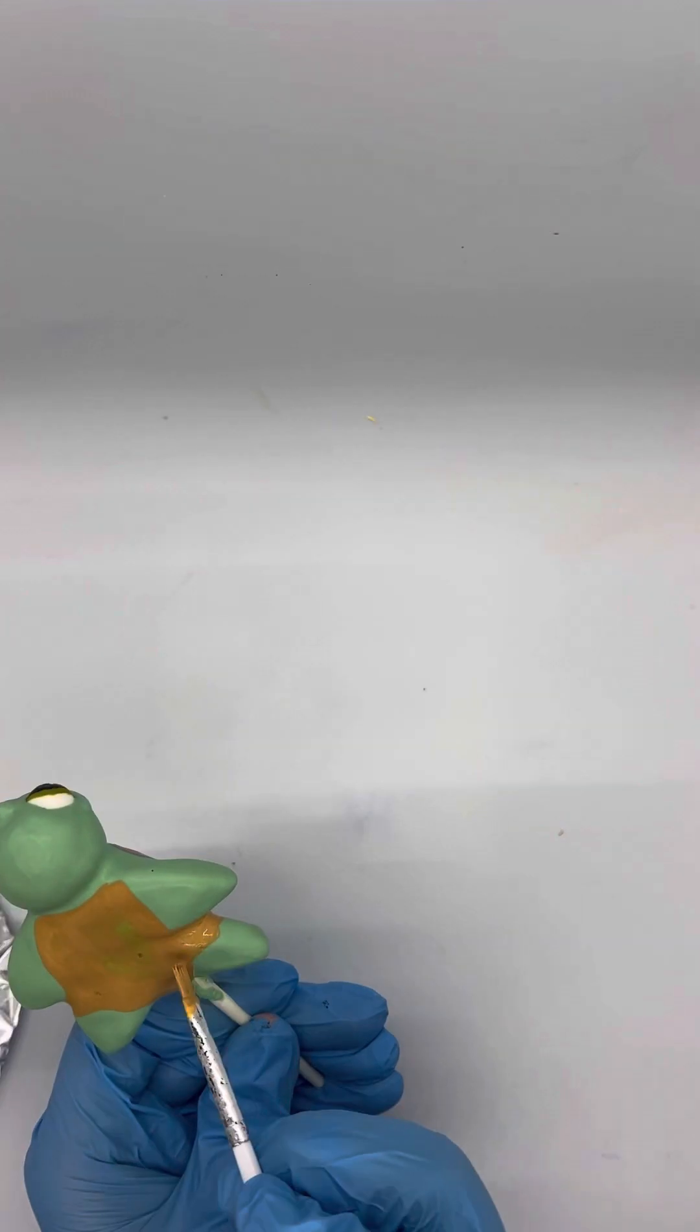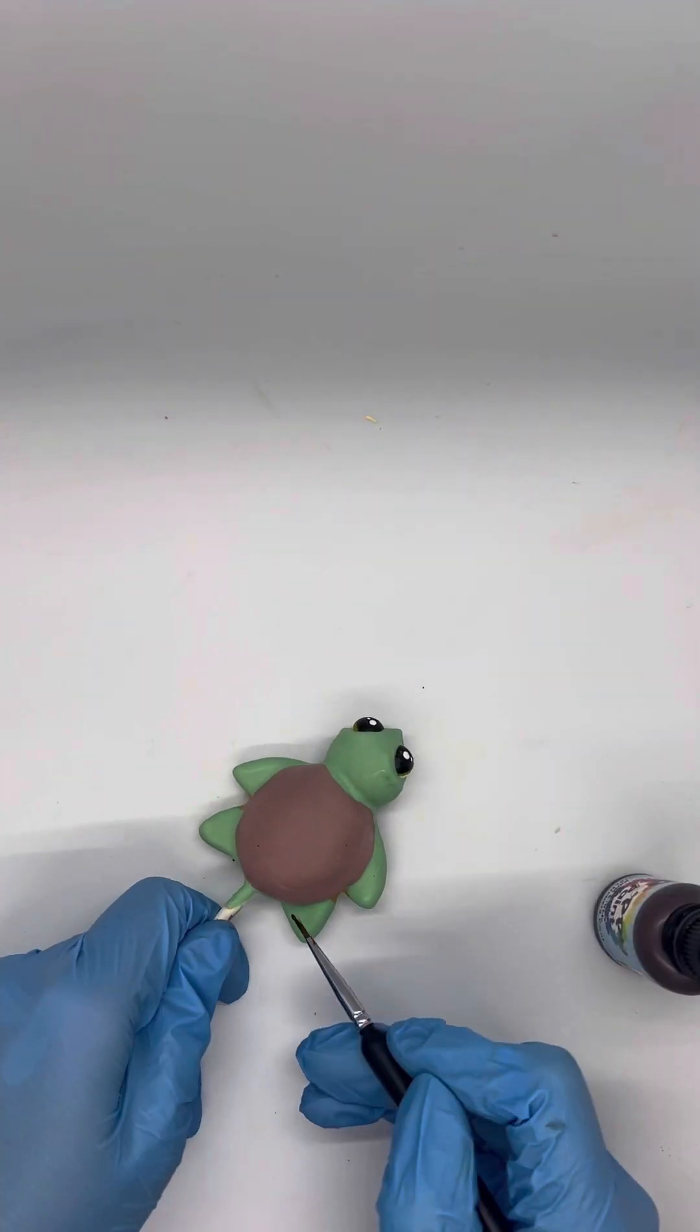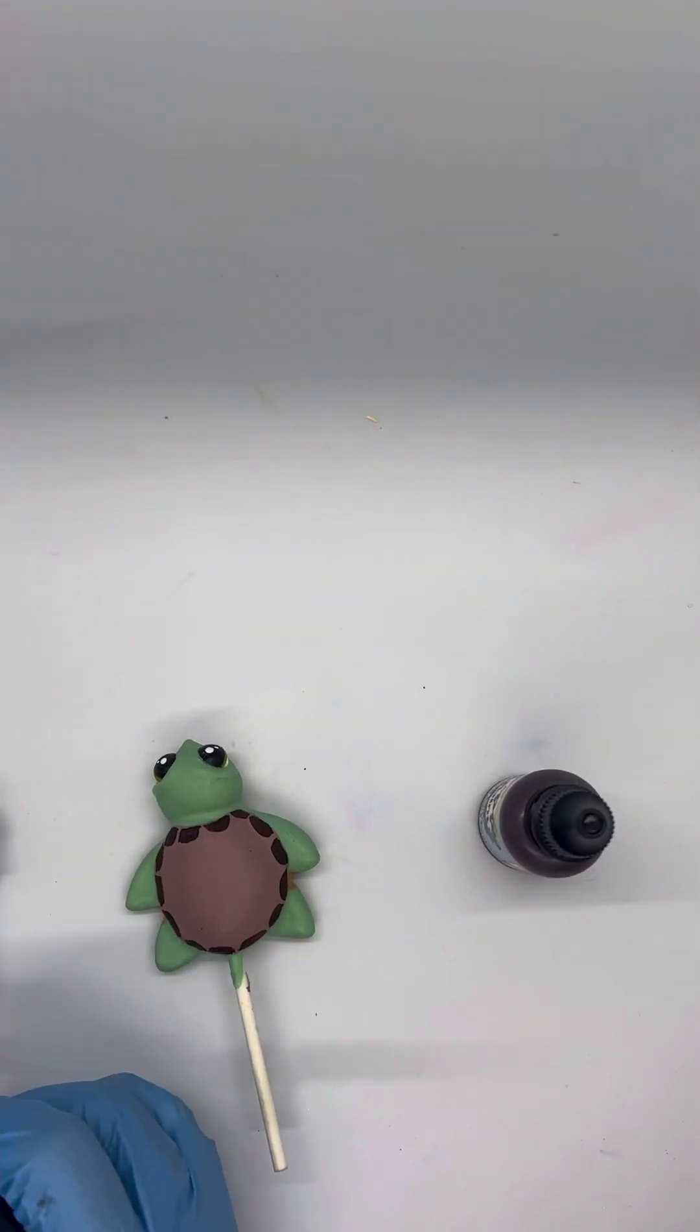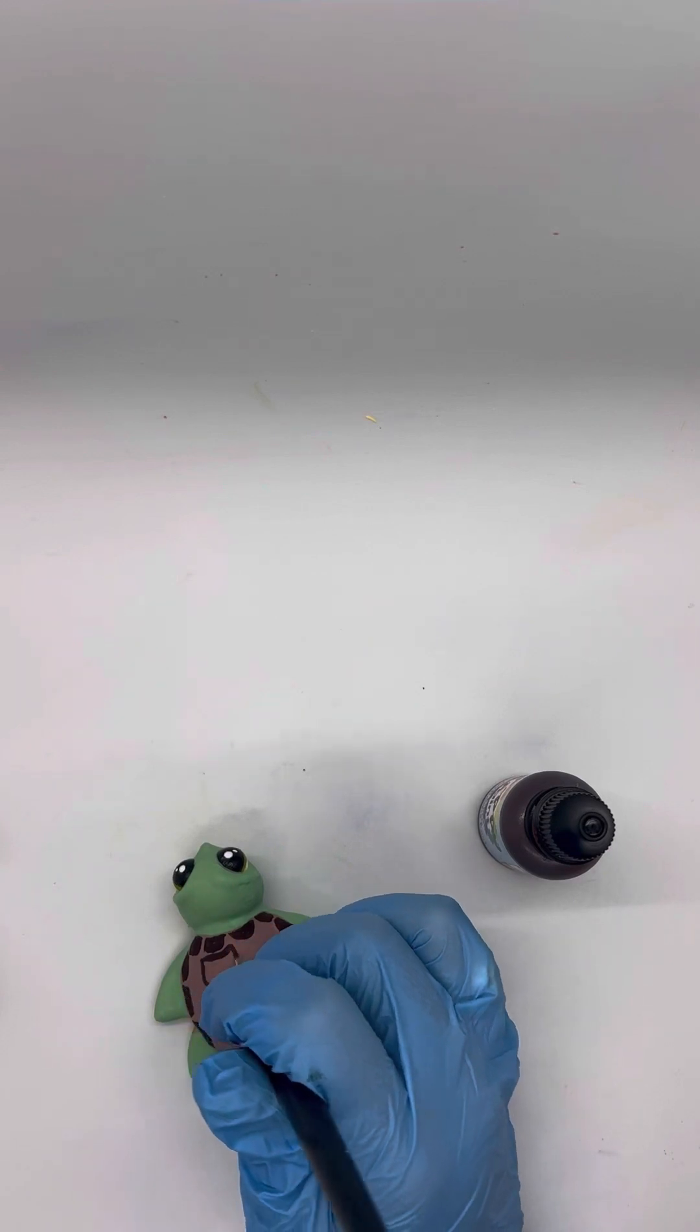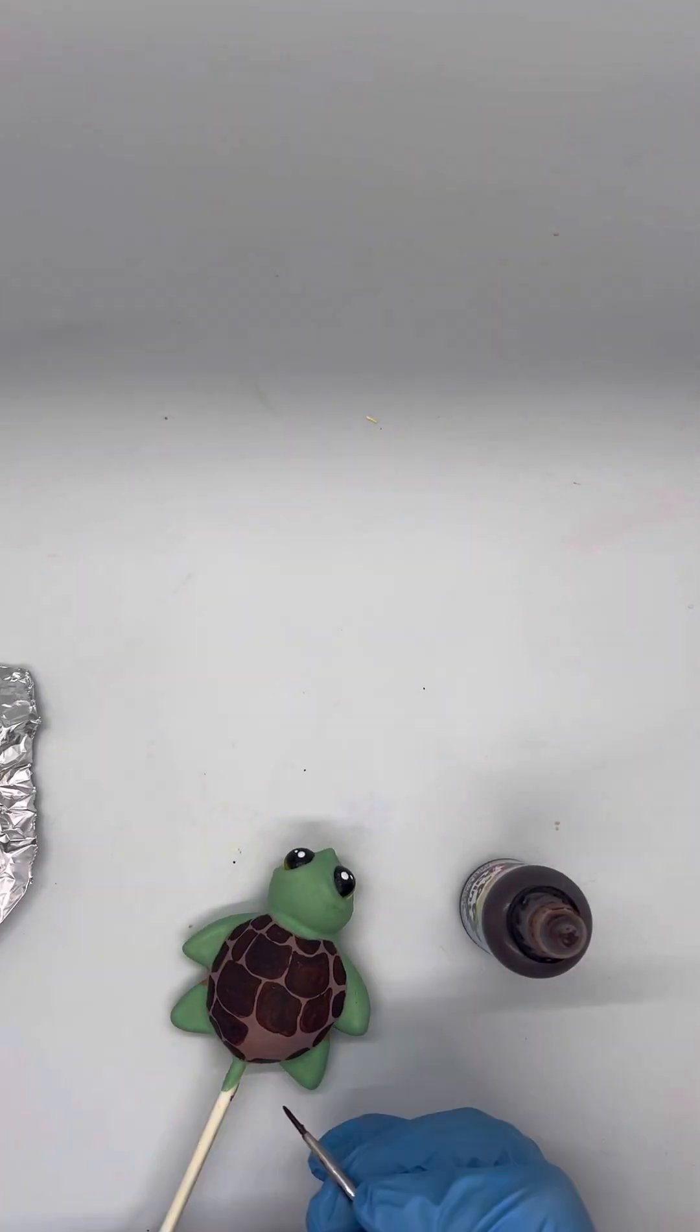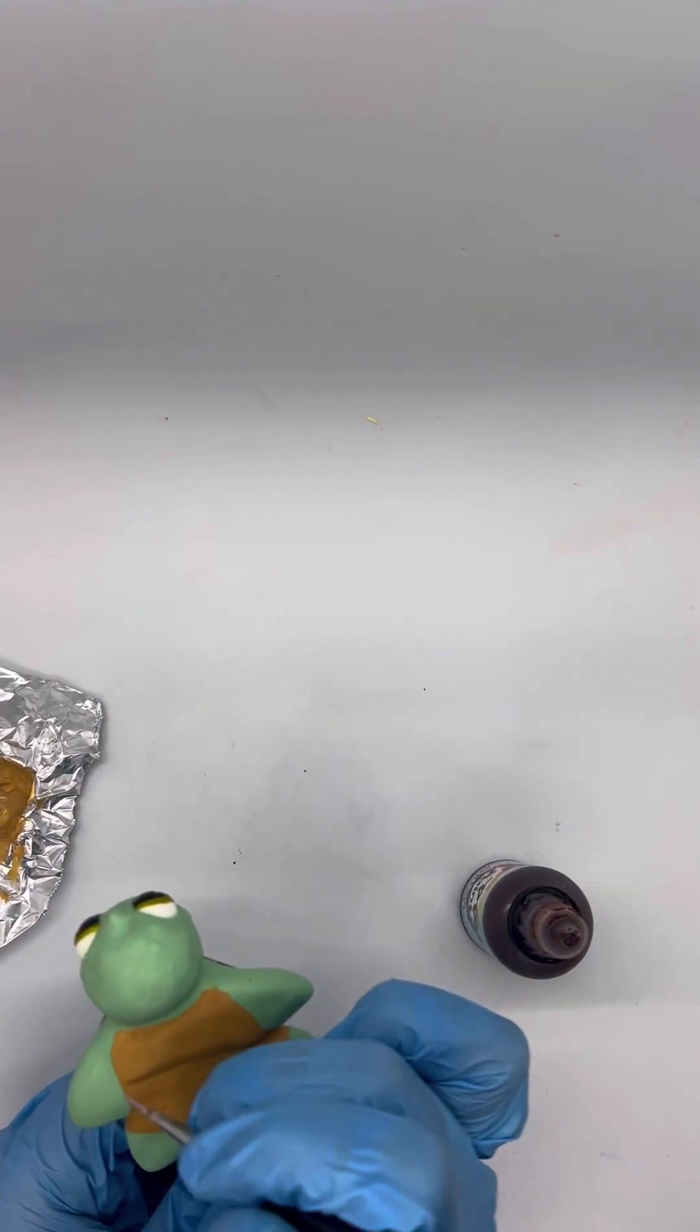I would actually probably make it a little lighter next time, but this will work. Then we're going to take just straight brown, and we're just going to start painting little half circle squares all along the edges of it. Then you'll do the same thing with the top. I don't know what shape you want to call these, but you're just going to cover the whole top of the shell while still leaving little lines in between them so it looks like it's individual pieces.